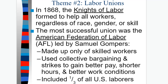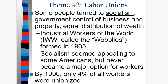In 1886, the Knights of Labor formed and helped workers regardless of race, gender, or skill. The most successful union was the American Federation of Labor (AFL), led by Samuel Gompers. It was made up of only skilled workers, and they used collective bargaining and strikes to gain better pay, shorter hours, and better working conditions — it included one-third of all U.S. laborers. Some turned to socialism — the government's control of business, property, and distribution of wealth. The Industrial Workers of the World (IWW), called the Wobblies, formed in 1905 and used socialism, which appealed to some Americans but never became a major political option. By the 1900s, only 4% of all workers were unionized. You're going to see similar socialist ideas being discussed in other foreign nations at the same time, like Russia and Germany.